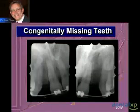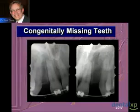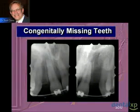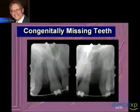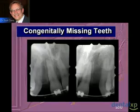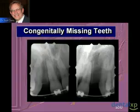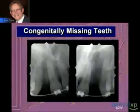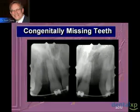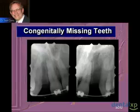Let me show one final case. This is what I refer to as an all-inclusive type case because it will review many of the concepts I've just described. This is a congenitally missing lateral case for both tooth number 7 and tooth number 10 — the right and left lateral incisors.